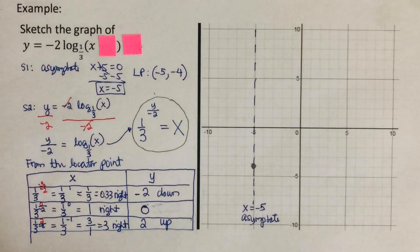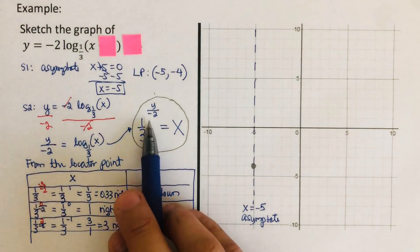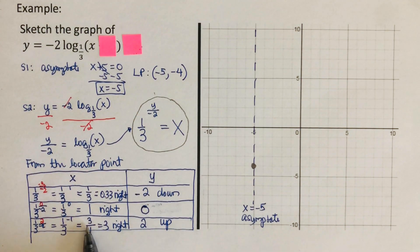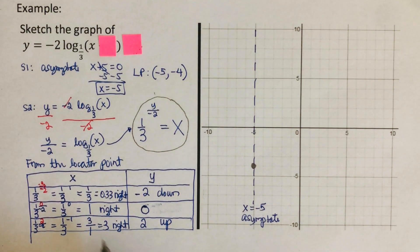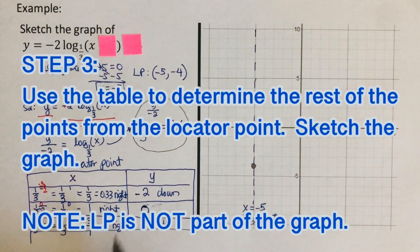Notice at the end we have one third to the negative one, because positive two divided by negative two is negative one — wait, that gives us three over one because we flip it to make it positive, so three divided by one is three. Now we're ready to move on to the fourth step: use the table of values to determine the points from the locator point and sketch the graph.